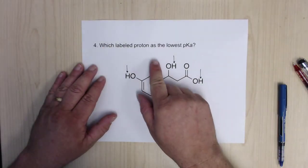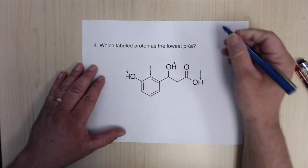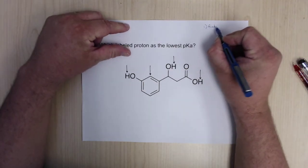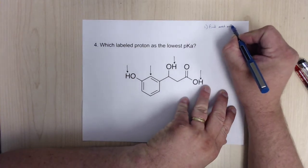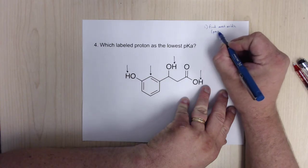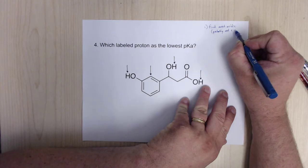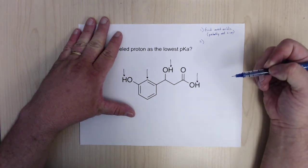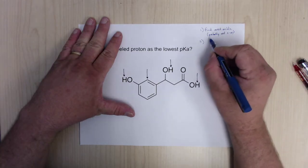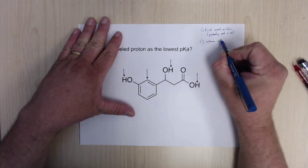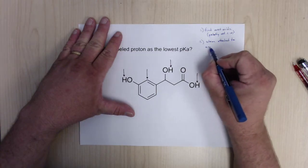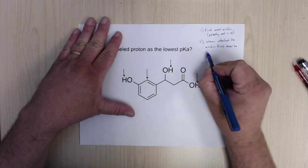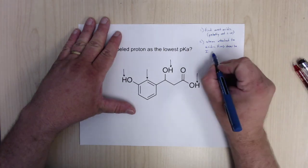The question asks which labeled proton has the lowest pKa. The steps for figuring out acidity are: first, find the most acidic hydrogen in the molecule — it's probably not on a carbon, as a general rule of thumb. Next, look at the atom attached to the acidic hydrogen. Closer to iodine on the periodic table means more acidic.